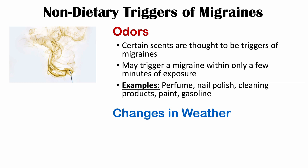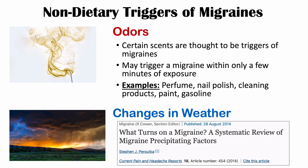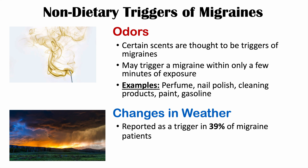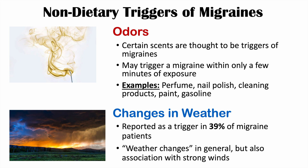Changes in weather are also triggers of migraines, from the article entitled 'What Turns on a Migraine? A Systematic Review of Migraine Precipitating Factors.' Changes in weather are reported as a trigger in roughly 39% of migraine patients. It is a general term, but there is a particular association with strong winds — strong winds may more specifically trigger migraines. Changes in atmospheric pressure are also implicated.